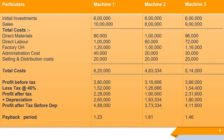Now let's understand the format I've prepared — this is the most important part. First, we write the initial investments: 6 lakhs, 6 lakhs, and 6 lakhs for all three machines. Then we copy the sales figures: 10 lakhs, 8 lakhs, and 9 lakhs.